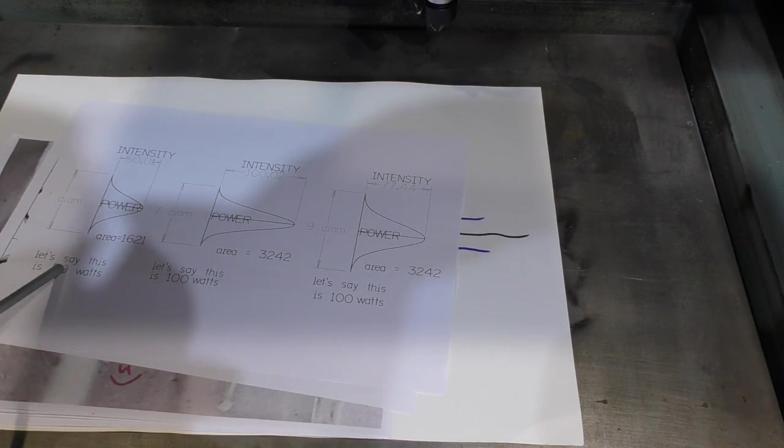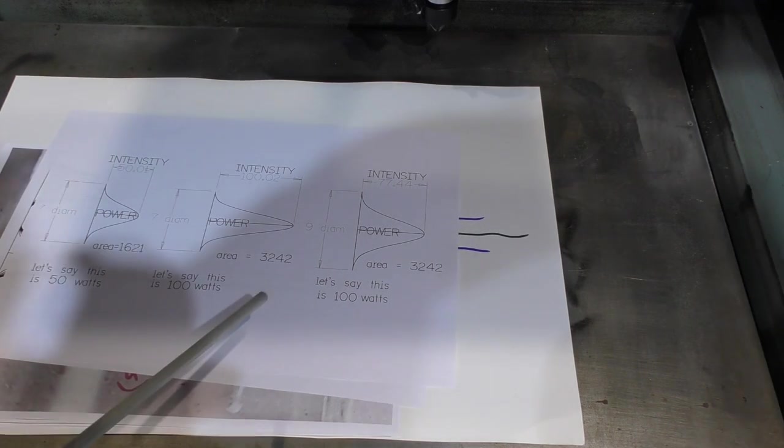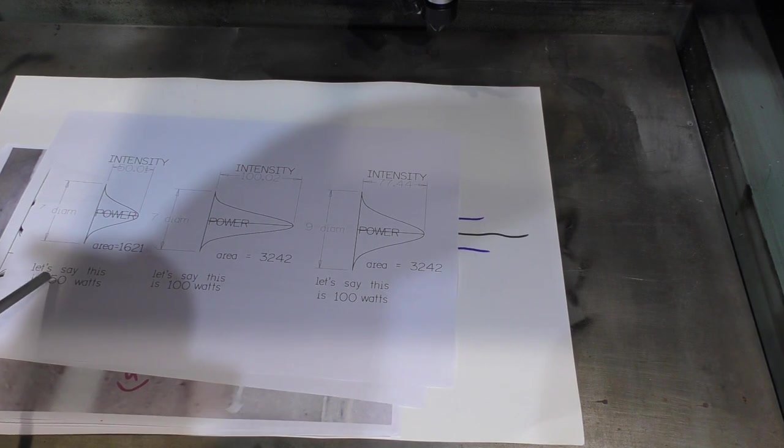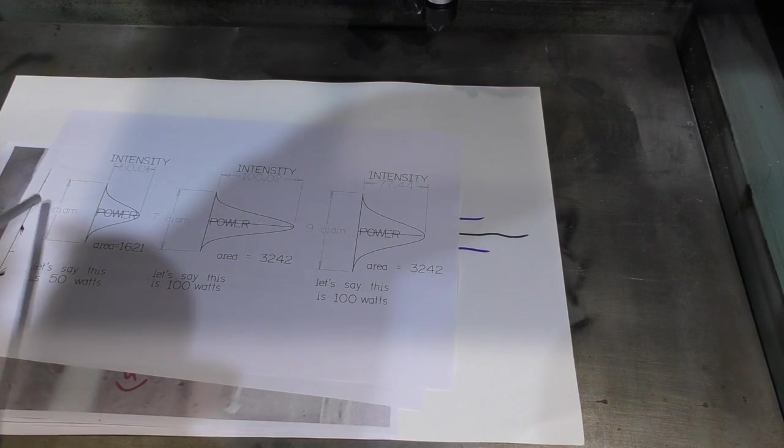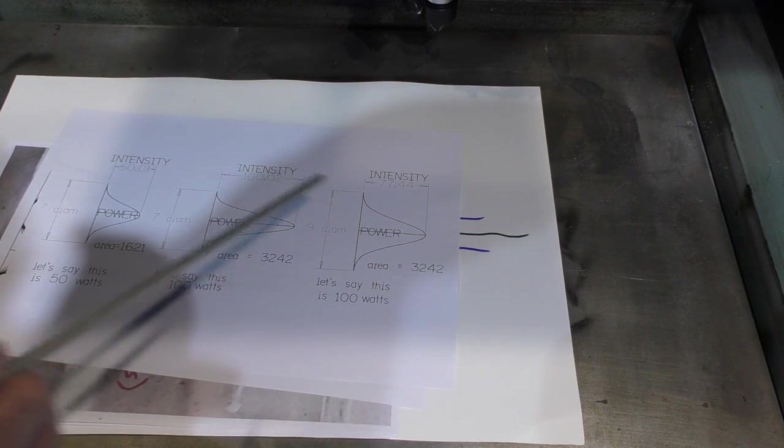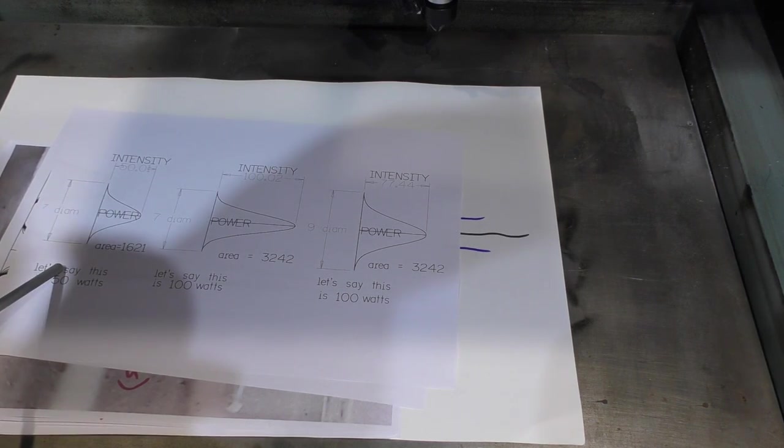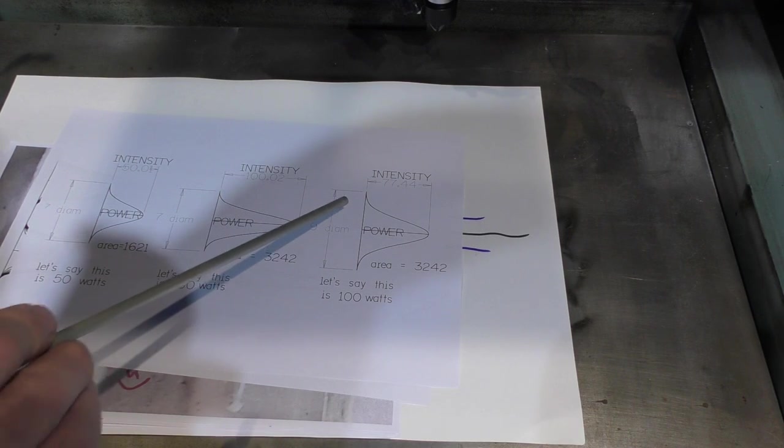So, you've currently got a 50 watt tube, and you decide that you're going to go out and buy a 100 watt tube. The thing is, when you look at the specification for 100 watt tube as opposed to a 50 watt tube, you'll find that the diameter of the beam will be bigger. I've just used these examples here, seven and nine.